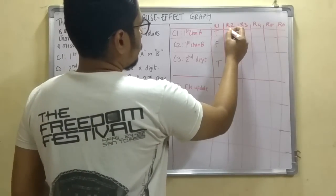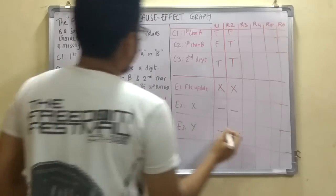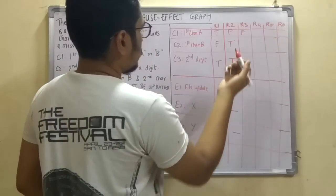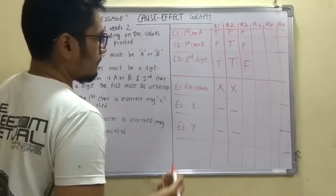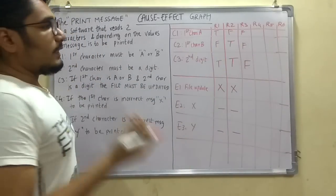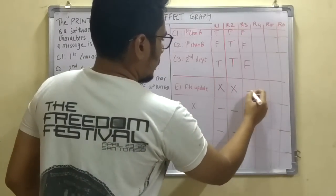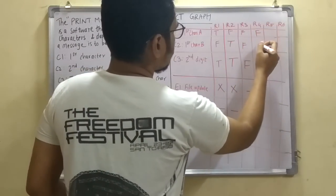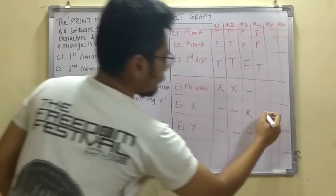For R1: if the first character is 'a' (C1 true, C2 false) and the second character is a digit (C3 true), then we update the file. For R2: if the first character is 'b' (C1 false, C2 true) and the second is a digit, we also update the file. For R3: if the first character is neither 'a' nor 'b' — the first condition fails — then message X is printed.